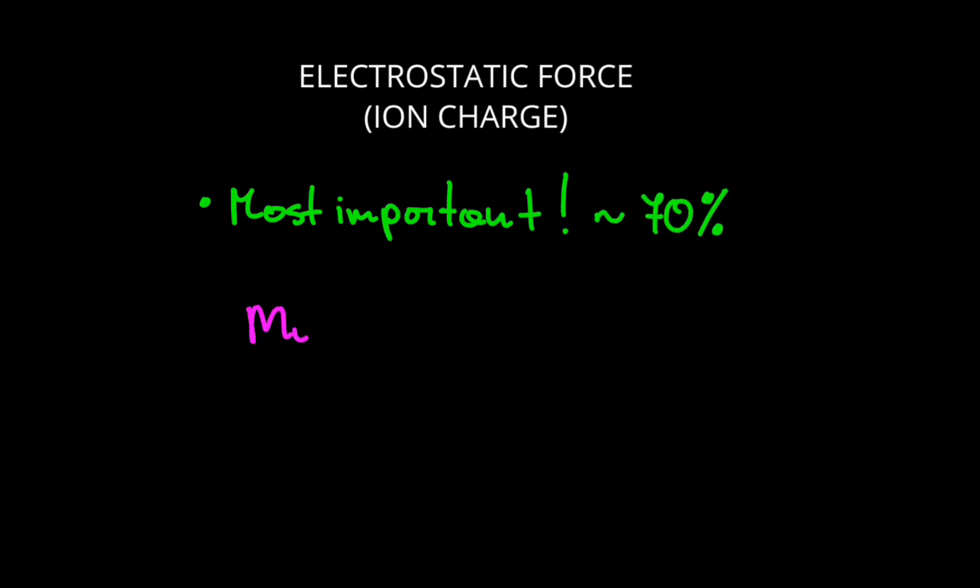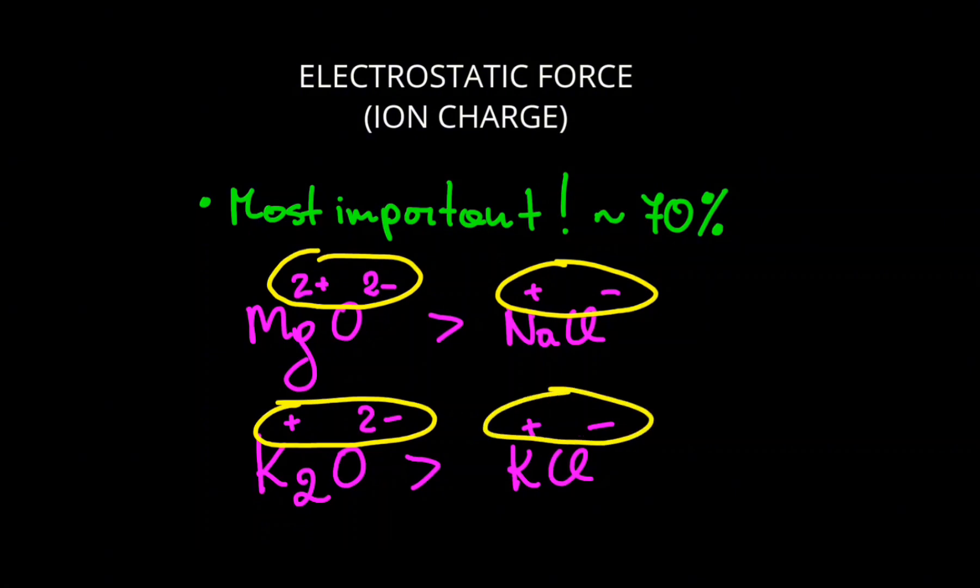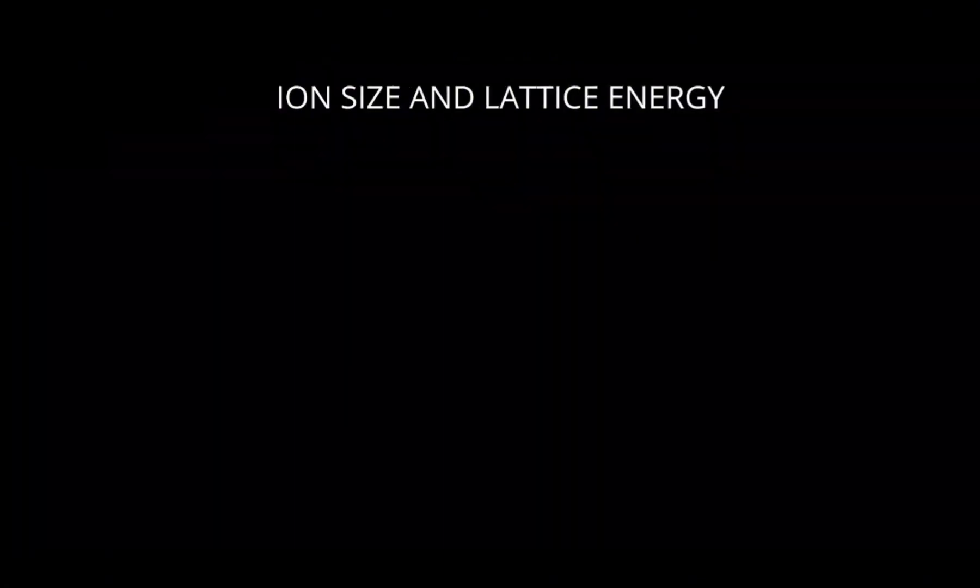For example, magnesium oxide has a much stronger bond than sodium chloride due to the higher charges. And potassium oxide has a stronger bond than potassium chloride because the overall charge is bigger. So the higher the charge, the stronger the bond.